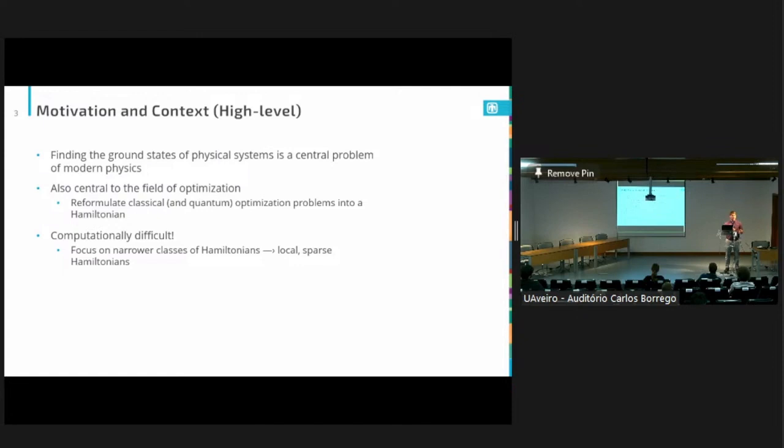Of course, this means that this task is, in general, computationally very difficult. What that means is that, in practice, we can do two things. We can instead focus on approximating the ground state energy, which is also most likely very challenging, which then leads us to having to focus on narrower classes of Hamiltonians, which is exactly what we'll do in this work.